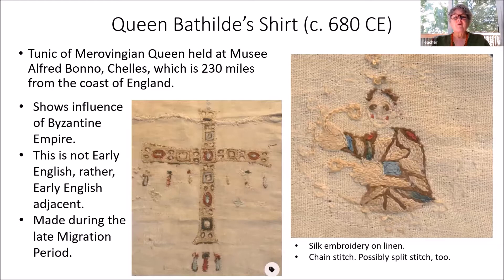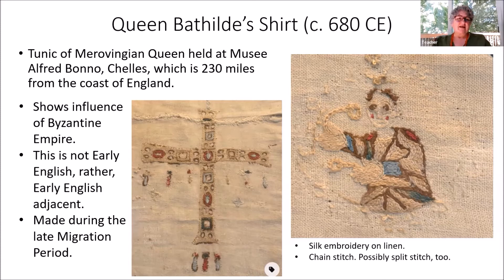Now we're going to cover Queen Batilde's shirt from about 680. This is the tunic of a Merovingian queen held in the Musée Alfred Bonnet, about 230 miles from the coast of England. It shows the influence of the Byzantine Empire. It is not early English, but early English adjacent — if people were migrating from the mainland to Great Britain, they could have brought this skill set. This is silk embroidery on linen, done in chain stitch and possibly split stitch as well. There are more photos available online and a link in the bibliography.